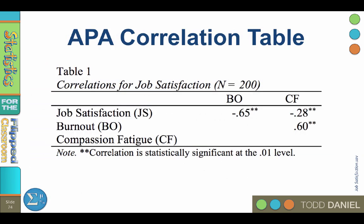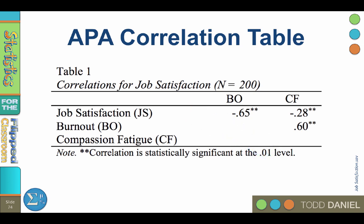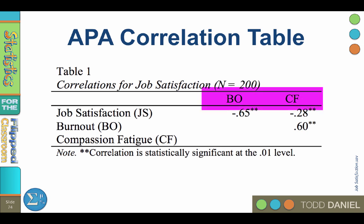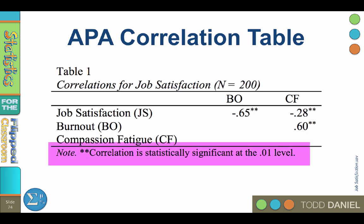This is what our APA style correlation table should look like. Because every variable correlates with itself at a positive 1, use a 1, a dash, or just leave those spaces blank. Also report each correlation only once — that is why the boxes in the lower left of this table are all blank. When naming variables, I used abbreviations in the columns but defined them with the variable names. You could also repeat the full variable names, use numbers, or use abbreviations and define them in a note below the table. Finally, I used the SPSS convention of two asterisks for correlations significant at the .01 level, and included the meaning of those asterisks in a note below the table.